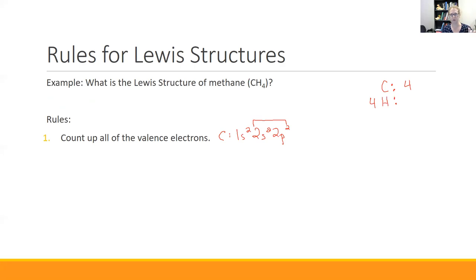Group one has one valence. Group two has two valence. We skip over the transition metals. Three valence electrons, four valence electrons, five valence electrons, and then six, seven, eight. The column tells you how many valence electrons it has. Carbon lives here, so it has four. Hydrogen lives here. And so hydrogen has one, but there are four of them, so I'm going to put a four times one. So I have eight electrons to count up by the time I am all said and done here.